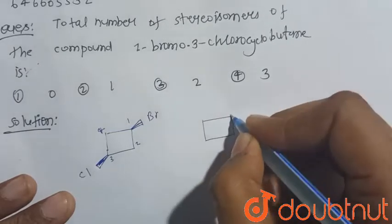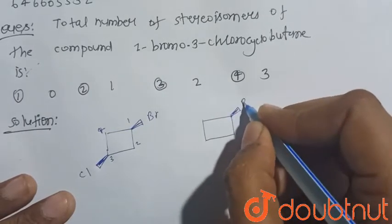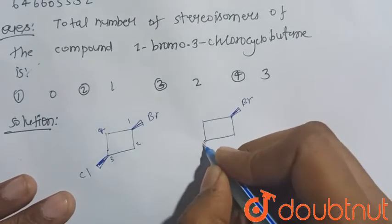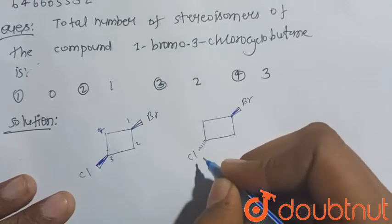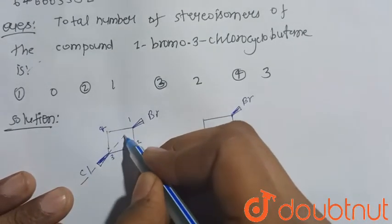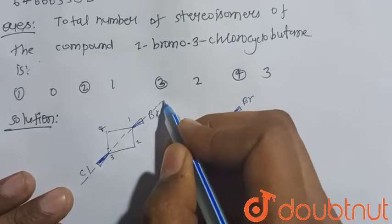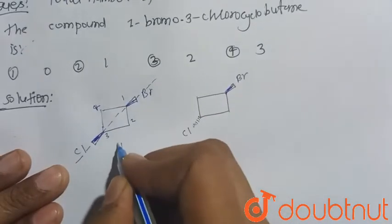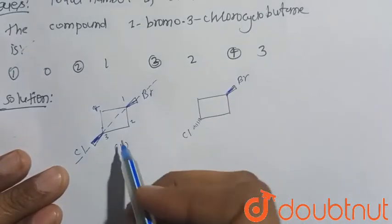1-bromo-3-chloro - it should be present on the dash position. So we can clearly see that it has a plane of symmetry. So this is only one - we have to consider only one stereoisomer, not its mirror image, because it is optically inactive.